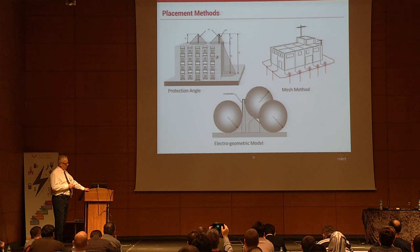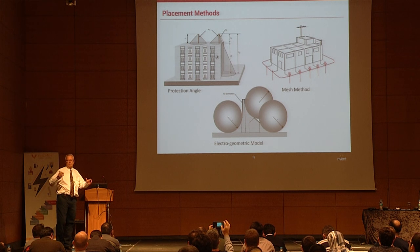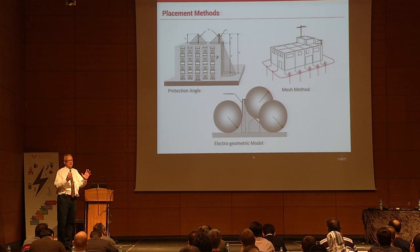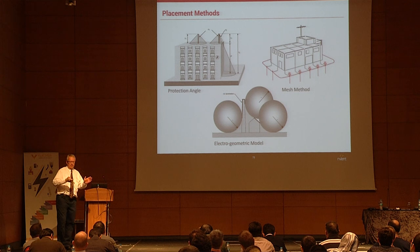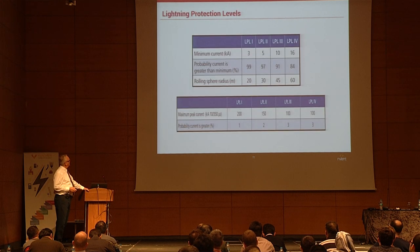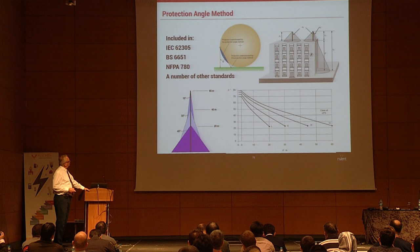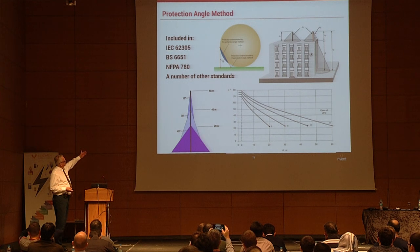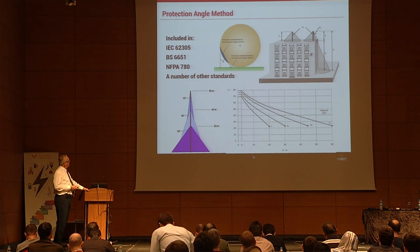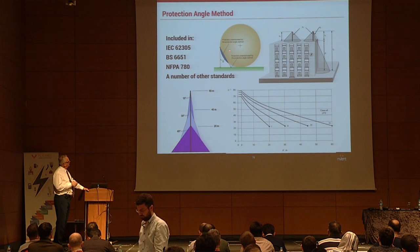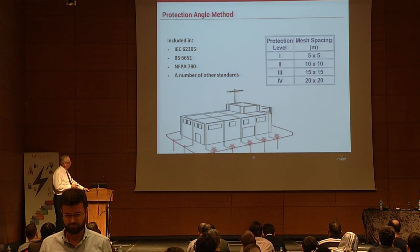The rolling sphere — electrogeometric model — rolls over the structure with a radius based on protection level, for example 20 meters for 99% protection, and where it touches is where you place your terminals. The rolling sphere is actually more conservative than the protection angle method, which might deem an area protected when the rolling sphere shows it is not. The protection angle is used in IEC, British standard, and NFPA 780 standards.